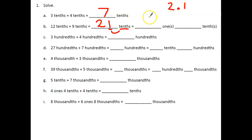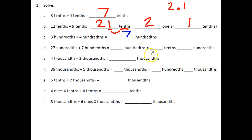Same thing: we have 3 hundredths plus 4 hundredths. Three plus four is seven, and since they're both hundredths, the answer is 7 hundredths.